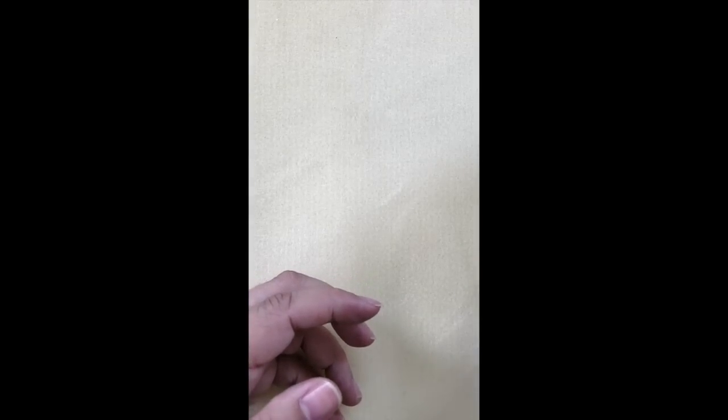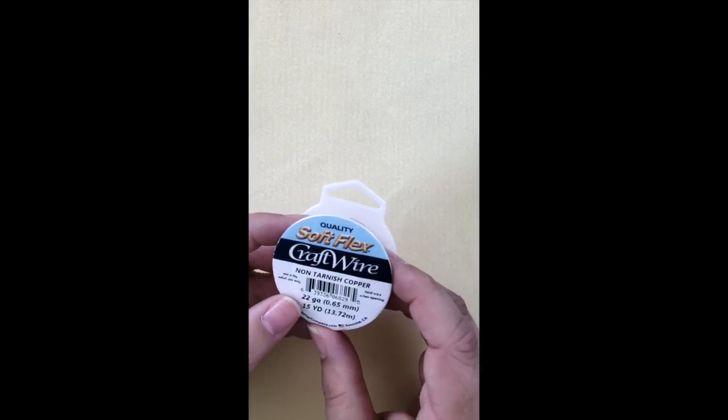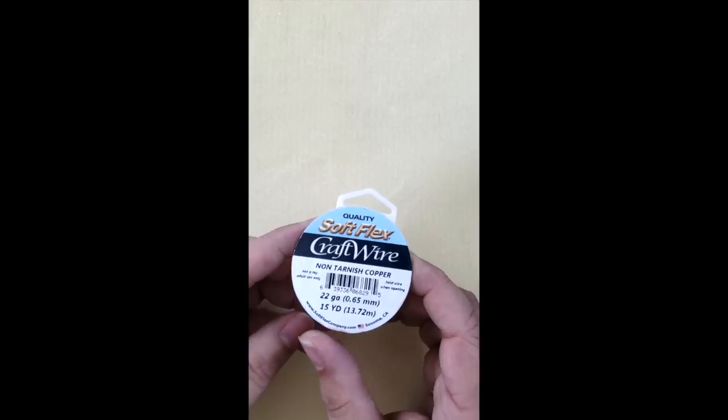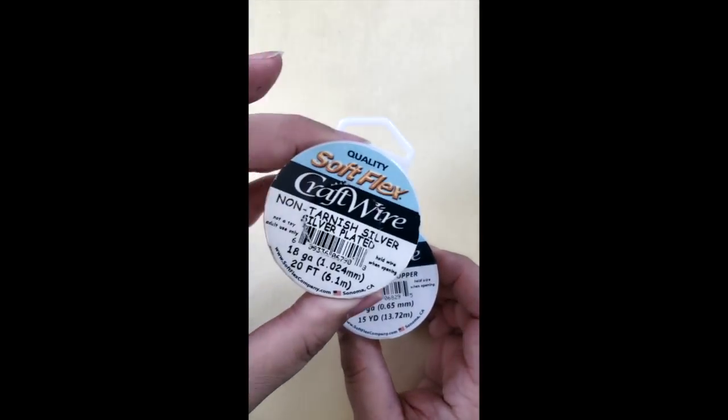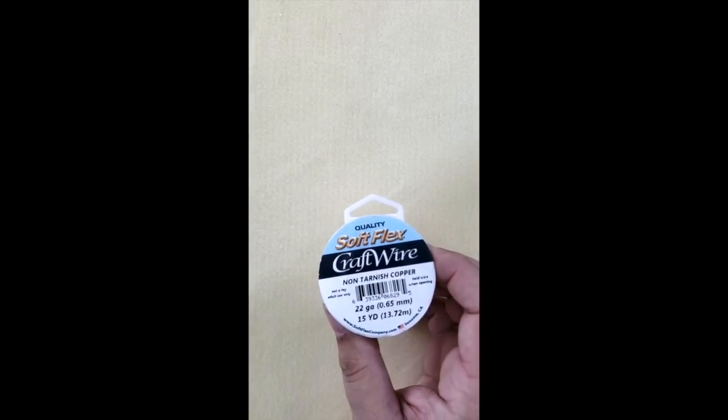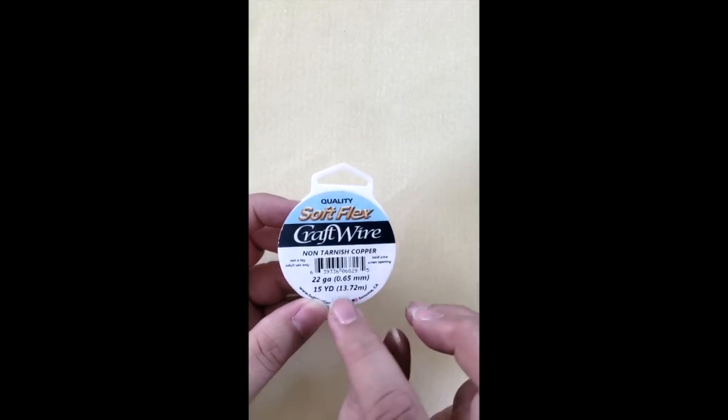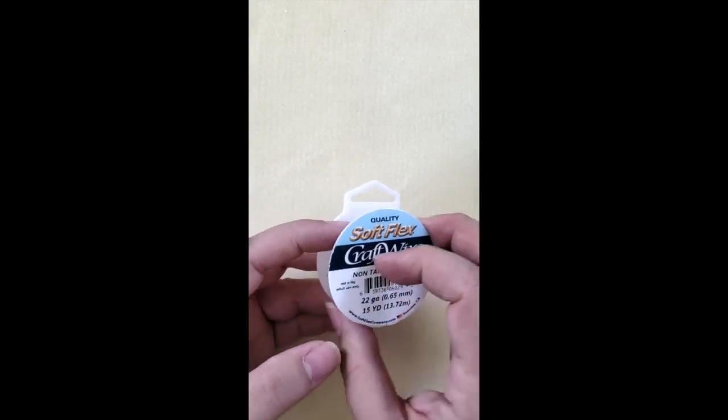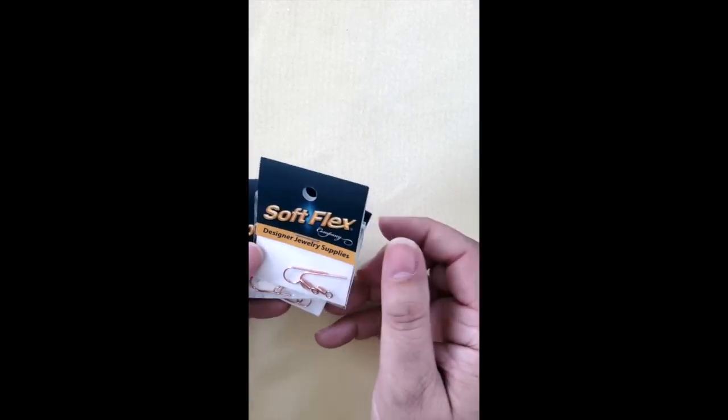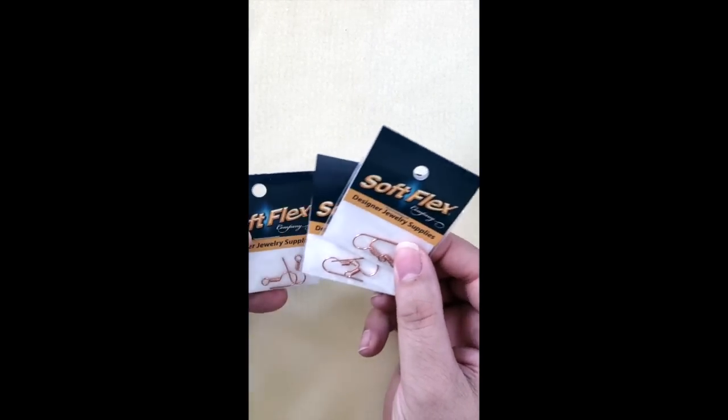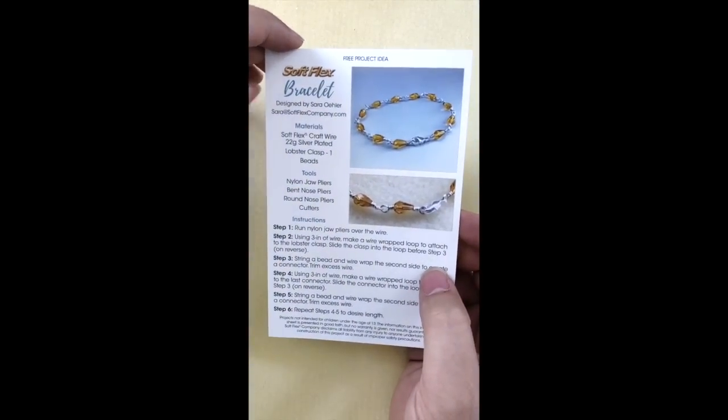Now the kit comes in three choices. You get copper and non-tarnished silver and we also have a gold color that I don't actually have here but it comes in 22 gauge. We also have included some findings here. We have a couple of pairs of ear wires and then there is a bead mat like the one here all included and then we have also included a project sheet for you.